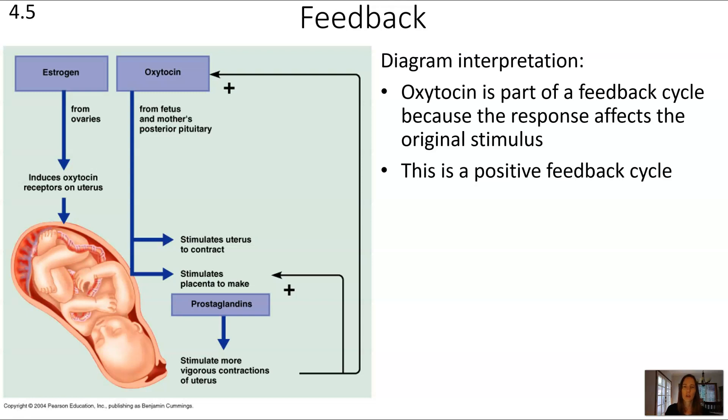Estrogen is not shown as a feedback cycle in this case because estrogen is just showing that it causes induction of oxytocin, but it doesn't link back to having another effect on estrogen. So an increase in estrogen levels is not showing that it has any effect on estrogen levels. And that's why it's not part of a feedback cycle in this diagram.